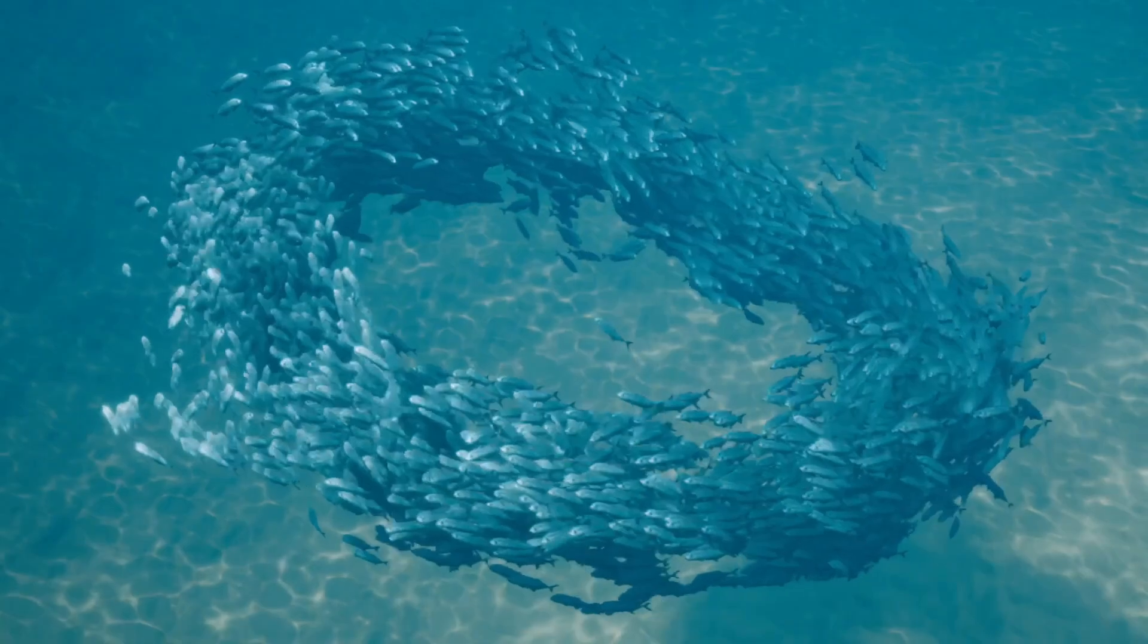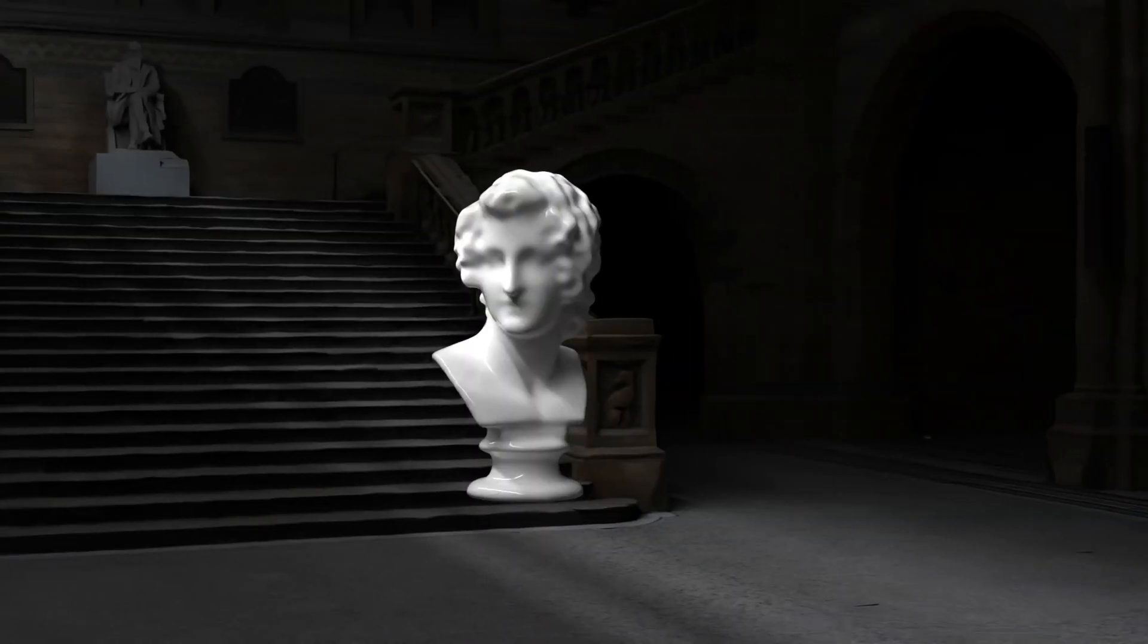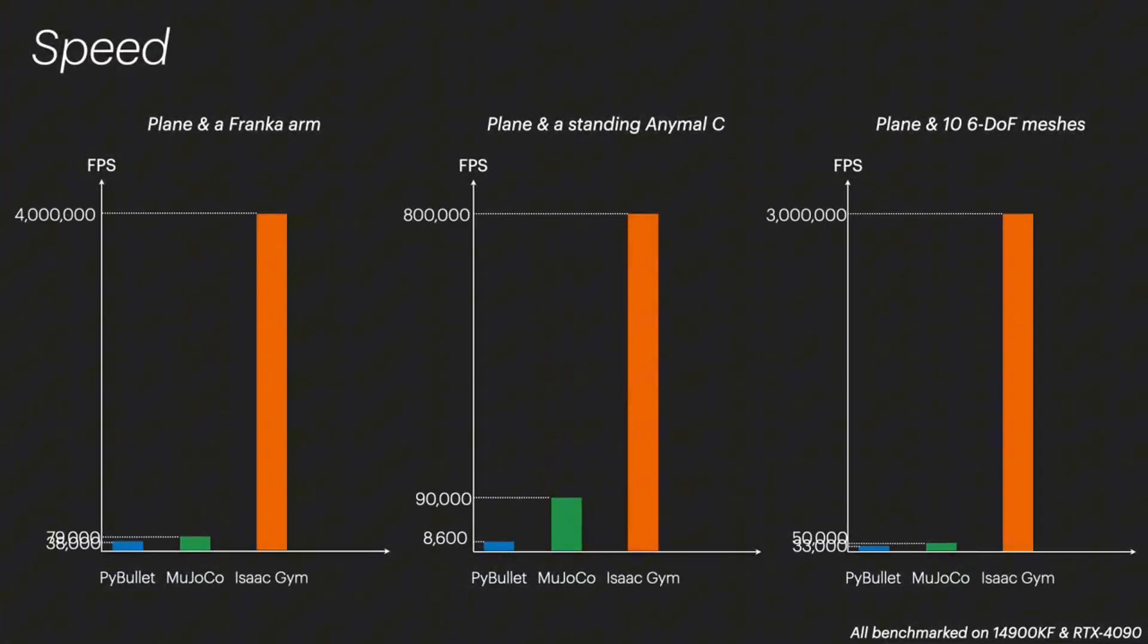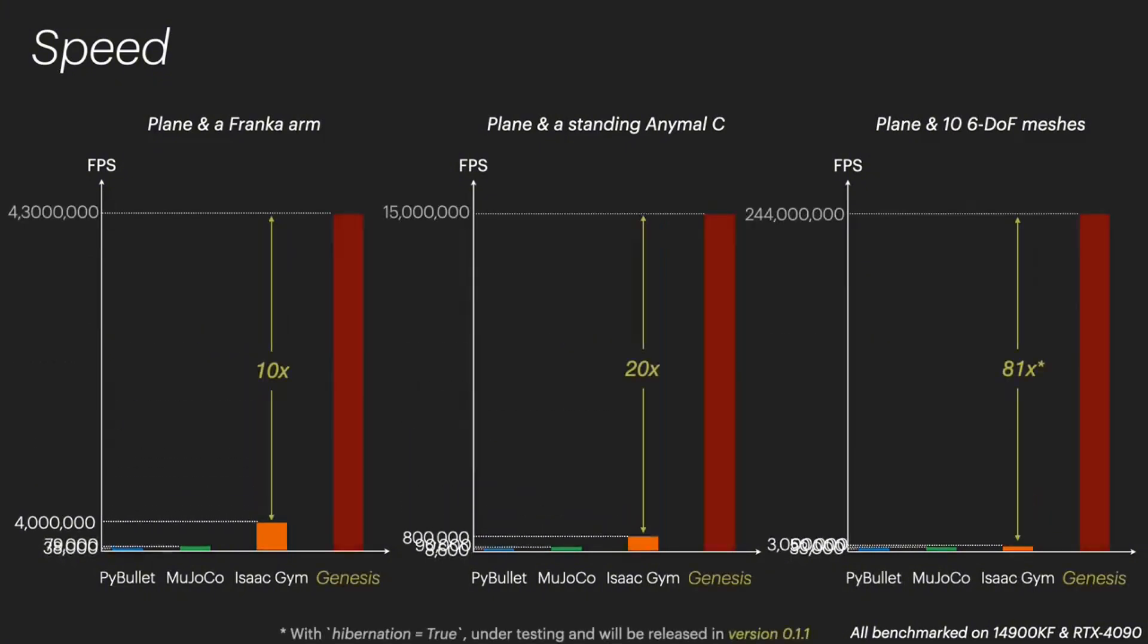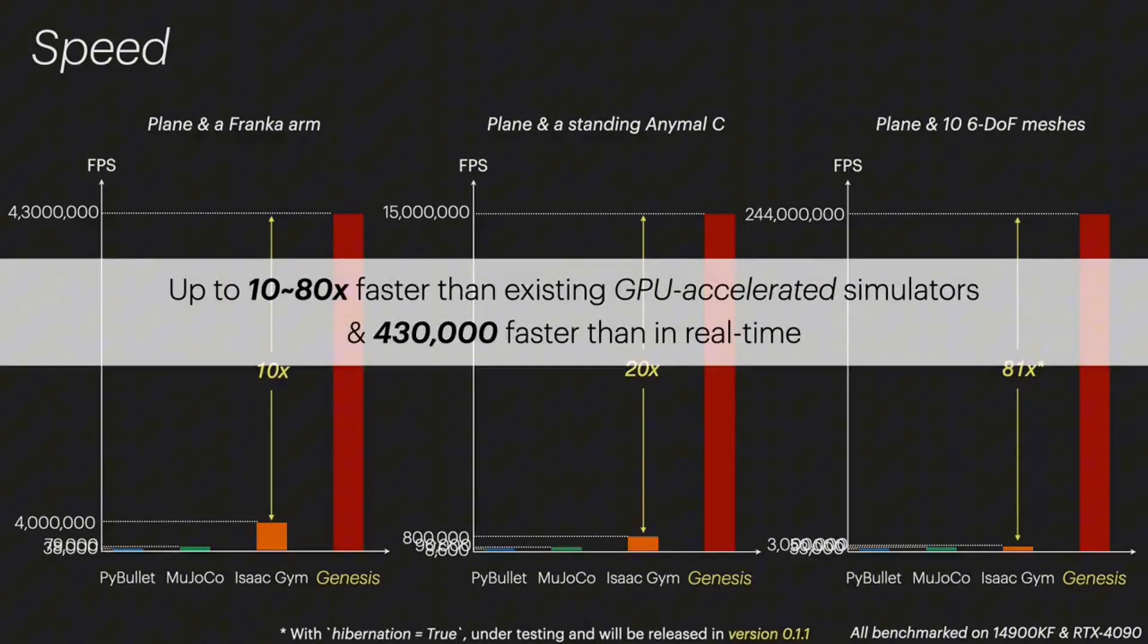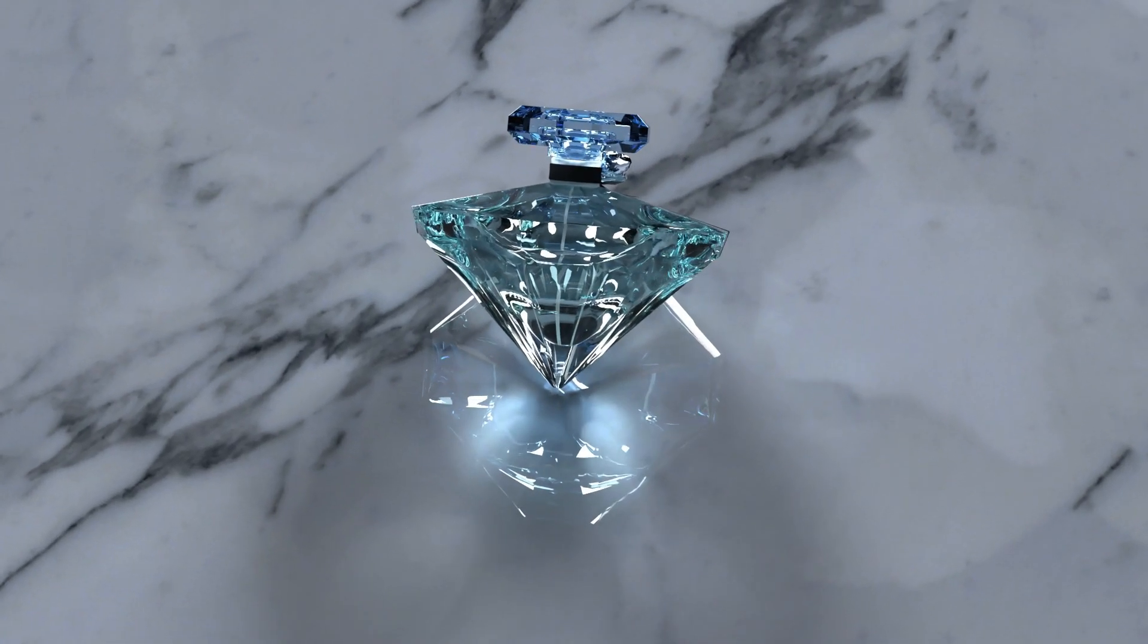The unmatched speed. Achieving speeds 10 to 80 times faster than traditional platforms like Isaac Gym, Genesis delivers up to 43 million FPS using a single RTX 4090. That's 430,000 times faster than real-time simulations.